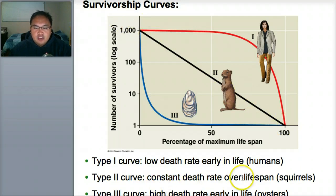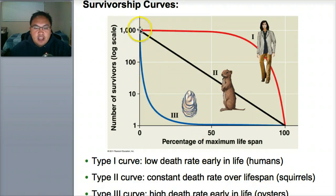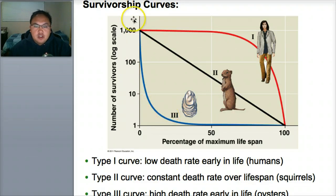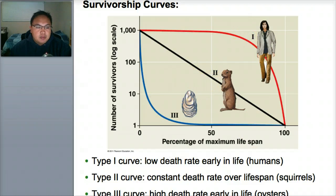The last survivorship type is type 3 — these are oysters. They have a very high death rate, so at 0 they have all of them, but within 5 to 10 years they're almost all gone. Oysters have a very short lifespan. You should be able to identify the three survivorship curves: type 1, type 2, and type 3.